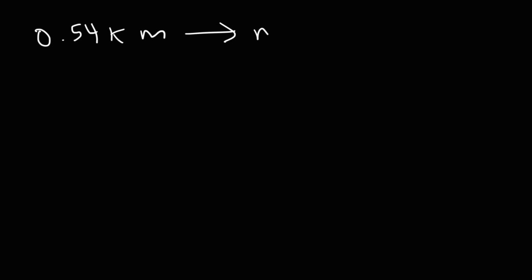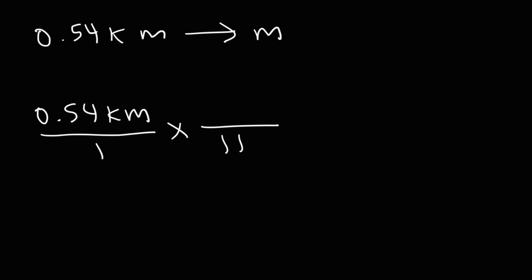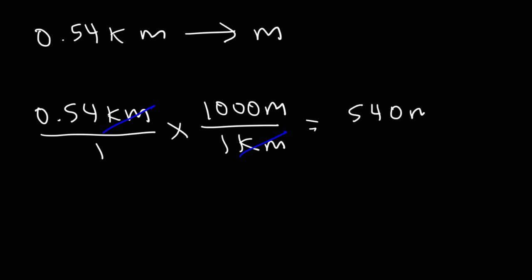For practice, try this example: convert 0.54 kilometers into meters. We know that one kilometer is equal to 1,000 meters. The units cancel, and it's just 0.54 times 1,000, so the answer is 540 meters. That's how we convert from kilometers into meters.